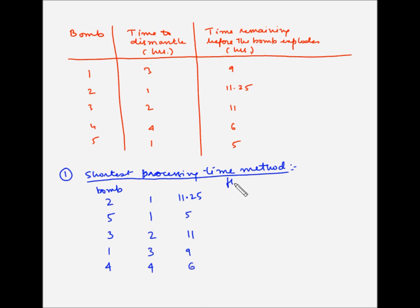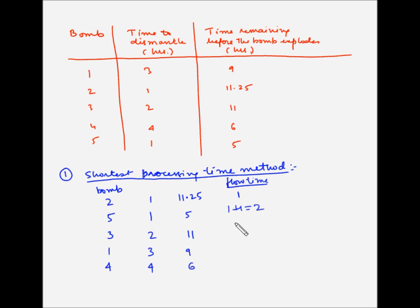Now let us find the flow time — the cumulative time within which these bombs will be dismantled. Bomb two is dismantled in 1 hour. Bomb five will be dismantled after bomb two, so 1 + 1 = 2 hours. Bomb three: 2 + 2 = 4 hours. Bomb one: 4 + 3 = 7 hours. And bomb four: 7 + 4 = 11 hours.